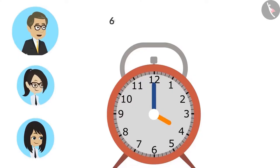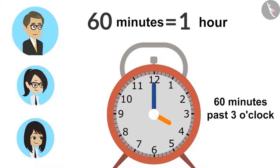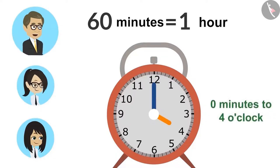How, sir? 60 minutes equals 1 hour. So when you say it's 60 minutes past 3 o'clock, this means that it is 1 hour more than 3 o'clock. As in, it is 0 minutes to 4 o'clock.